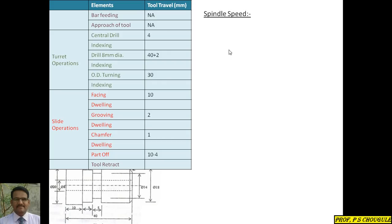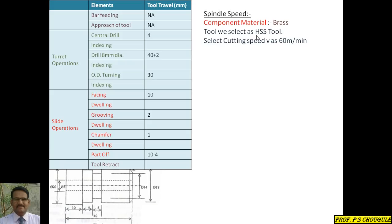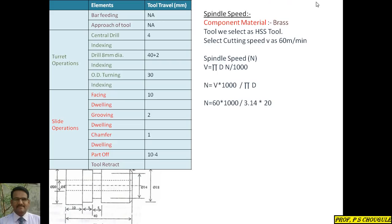Next, we select the spindle speed. Component material is brass and we are using an HSS tool, so we select a cutting speed of 60 meters per minute. The formula is V = πdn/1000, where V is cutting speed, d is component diameter, and n is spindle speed. Rearranging: n = V×1000 / (πd). Substituting values gives n = 955, which is approximately 1000 RPM. We select 1000 revolutions per minute.